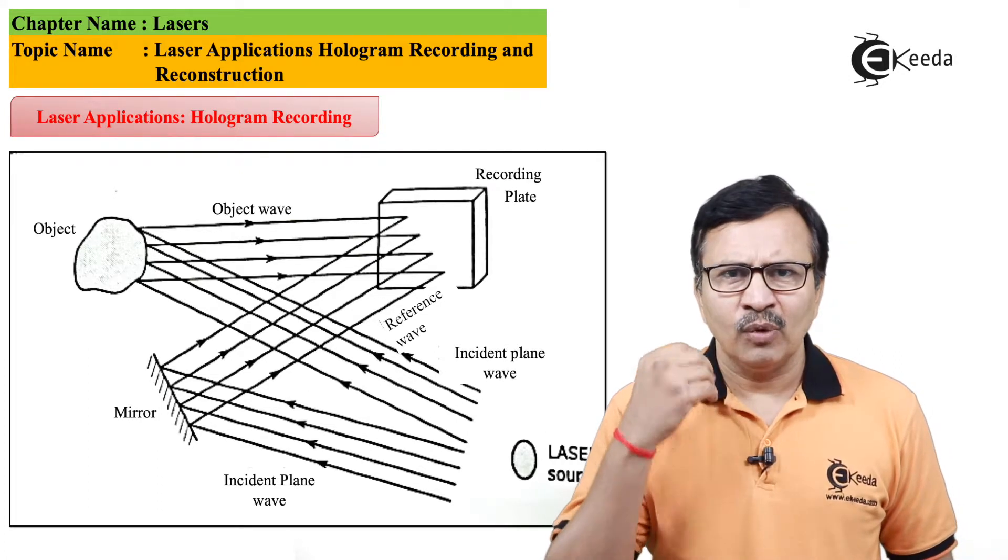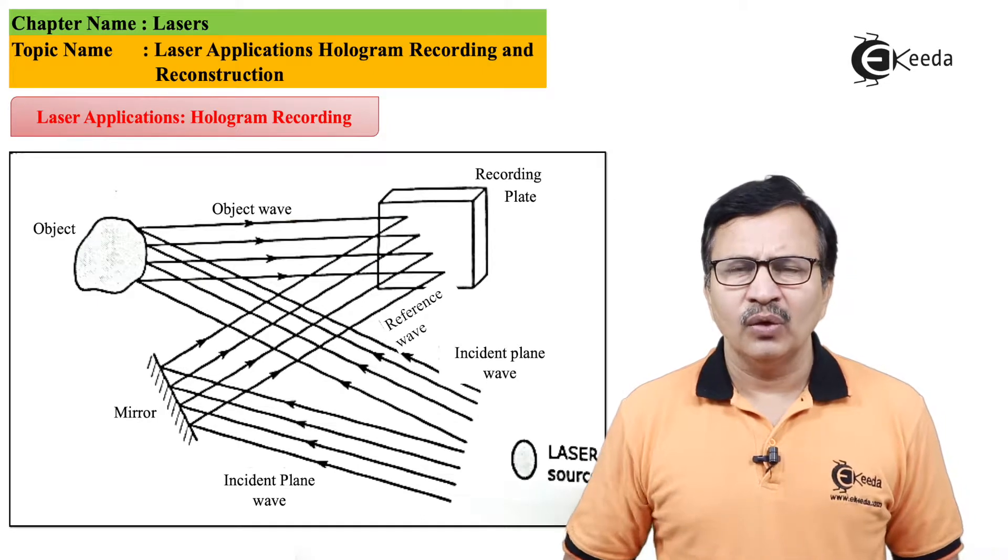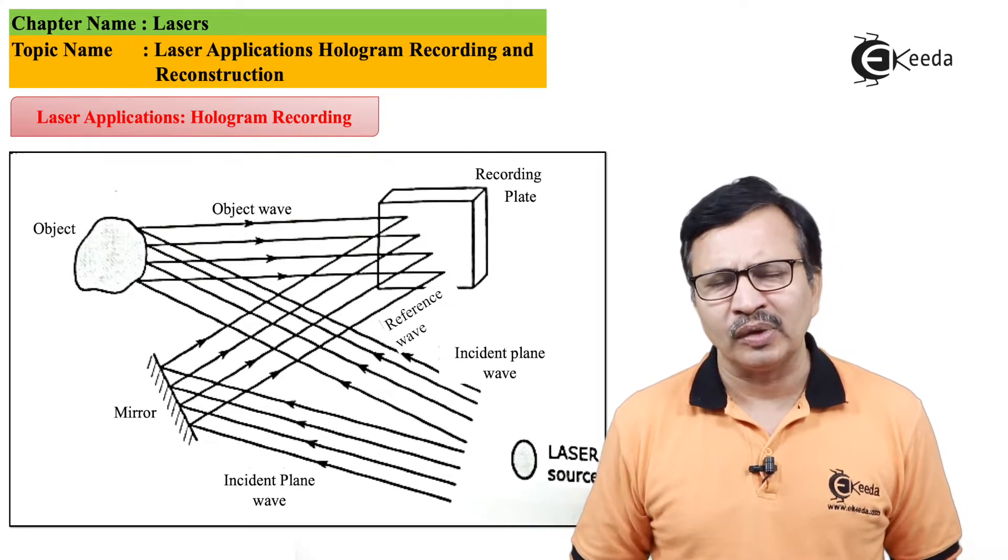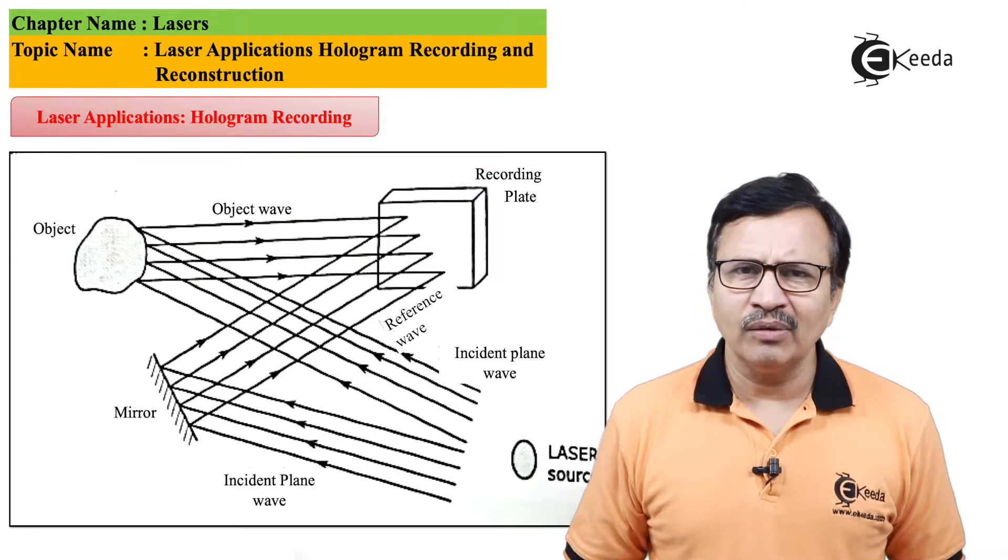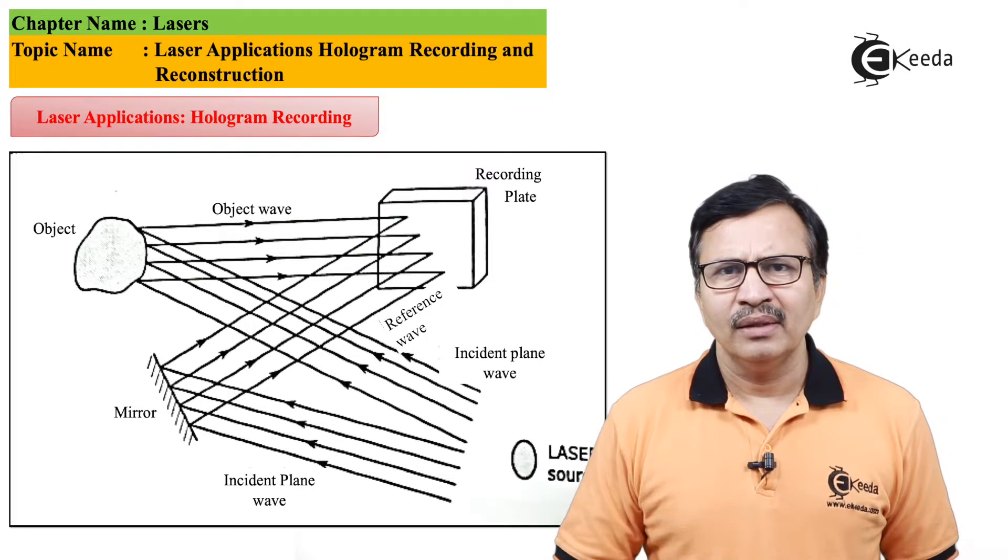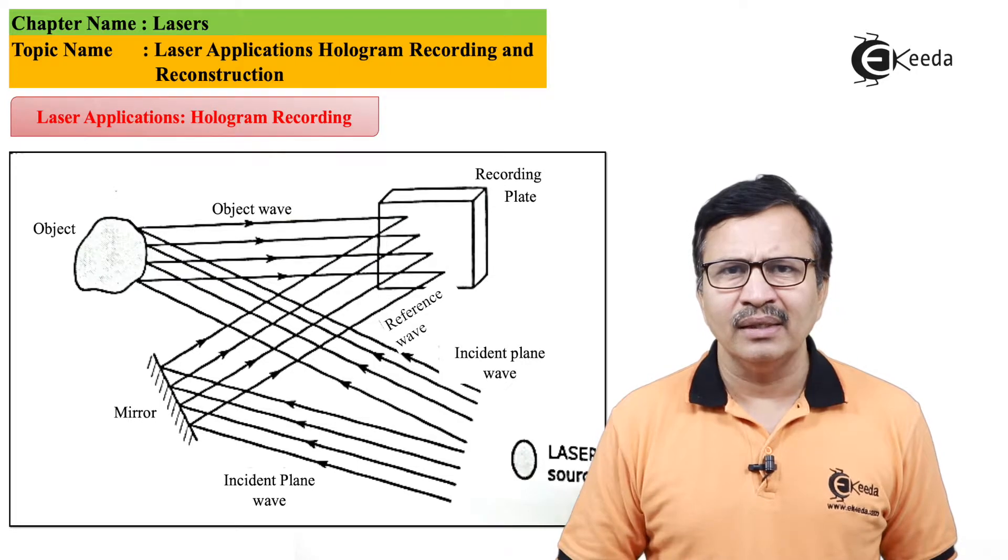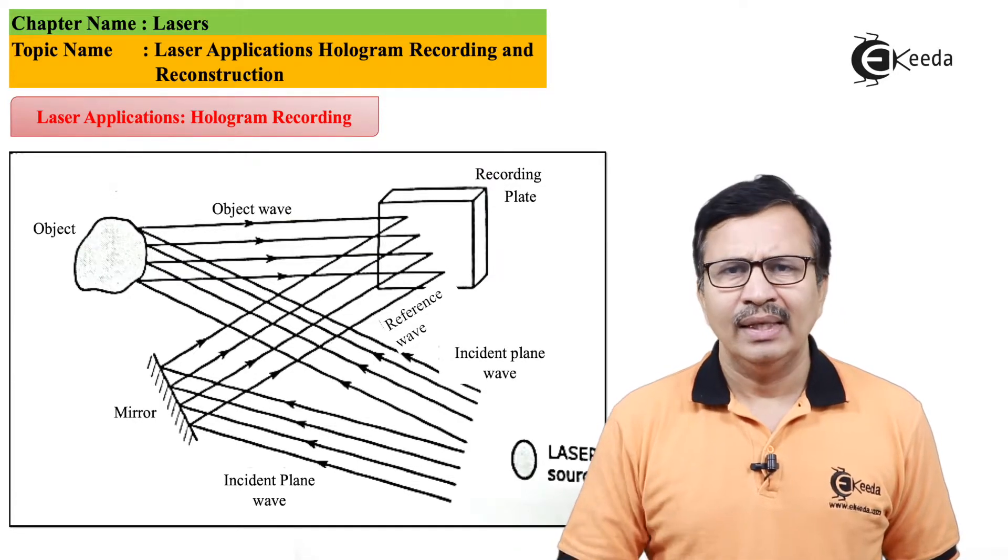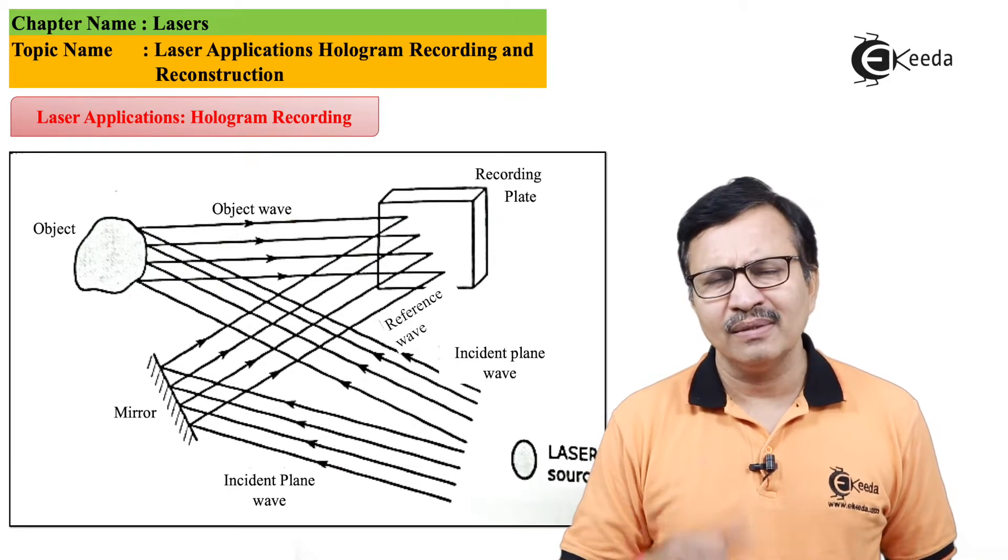So what is the first step in hologram? The first step is the recording of the hologram. For the recording of the hologram, we require a very high intensity, coherent and monochromatic source of light.